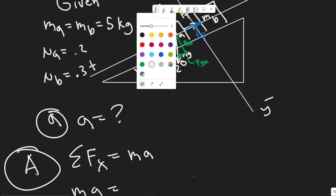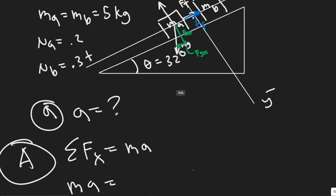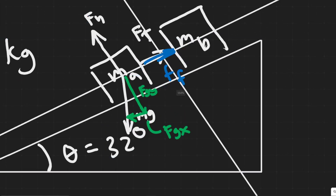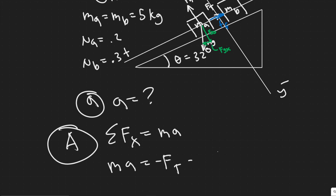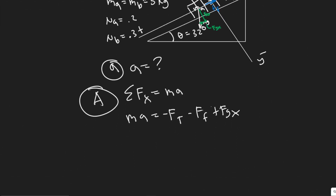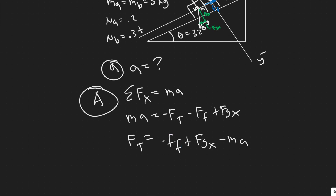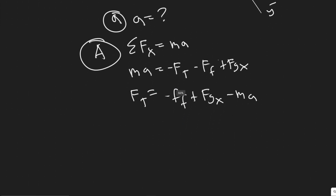Now that we have the free body diagram, we can sum the forces in the x direction. We have the force of friction along X, the tension along X, and the x-component of gravity. Left is positive, so we have minus F sub T — it points right — minus the force of friction — also to the right — plus FG of X, which points left down the slope. Solving for F of T, we get: F of T equals negative force of friction plus FG of X minus MA.